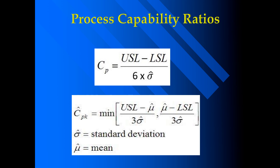For the calculation of CPK we have two formulas. The first is: upper specification limit minus the average, divided by 3 standard deviations. The second formula is: average minus the lower specification limit, divided by 3 standard deviations.